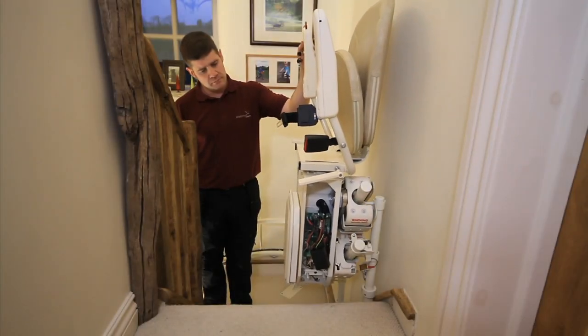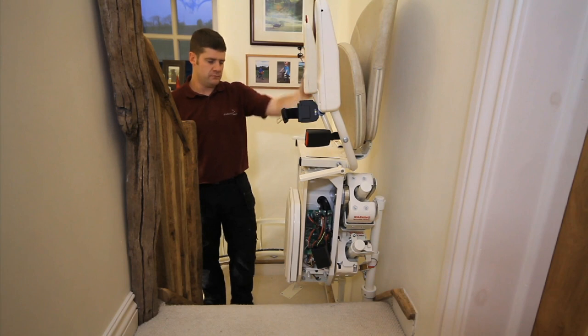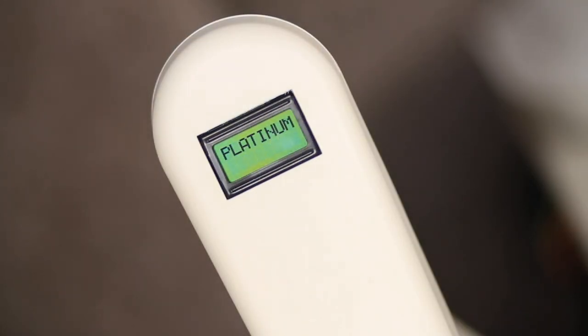Finally, run the carriage all the way to the top end stop and check that the display goes onto charge. The carriage is now fully programmed.